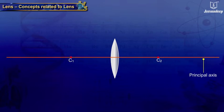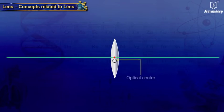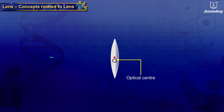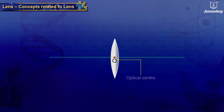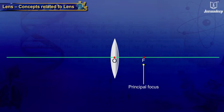The principal axis is an imaginary straight line passing through the two centers of curvature of the lens. The optical center is the center point of the lens on the principal axis. A ray of light passing through the optical center does not undergo any deviation.